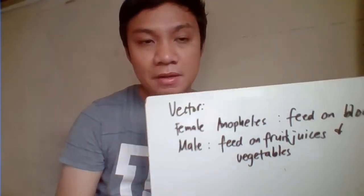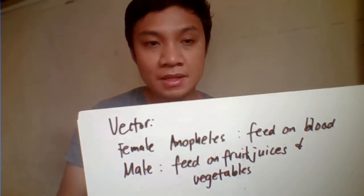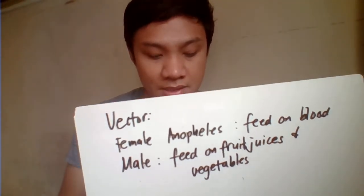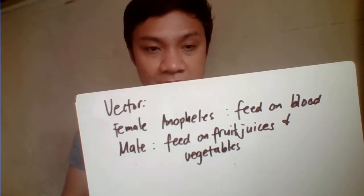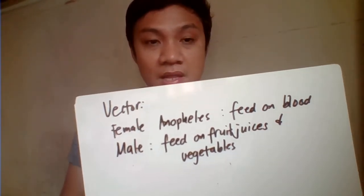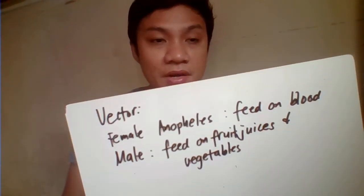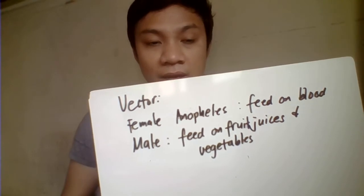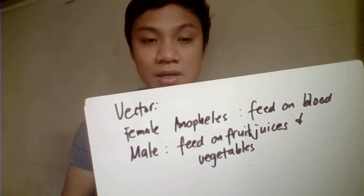Malarial Infection is transmitted by the bite of the female Anopheles mosquito, which is the vector because it feeds on the blood of patients — the blood provides nourishment for their eggs. The male Anopheles mosquito is not the agent of transmission because it does not feed on blood, but rather on fruit juices and vegetables.